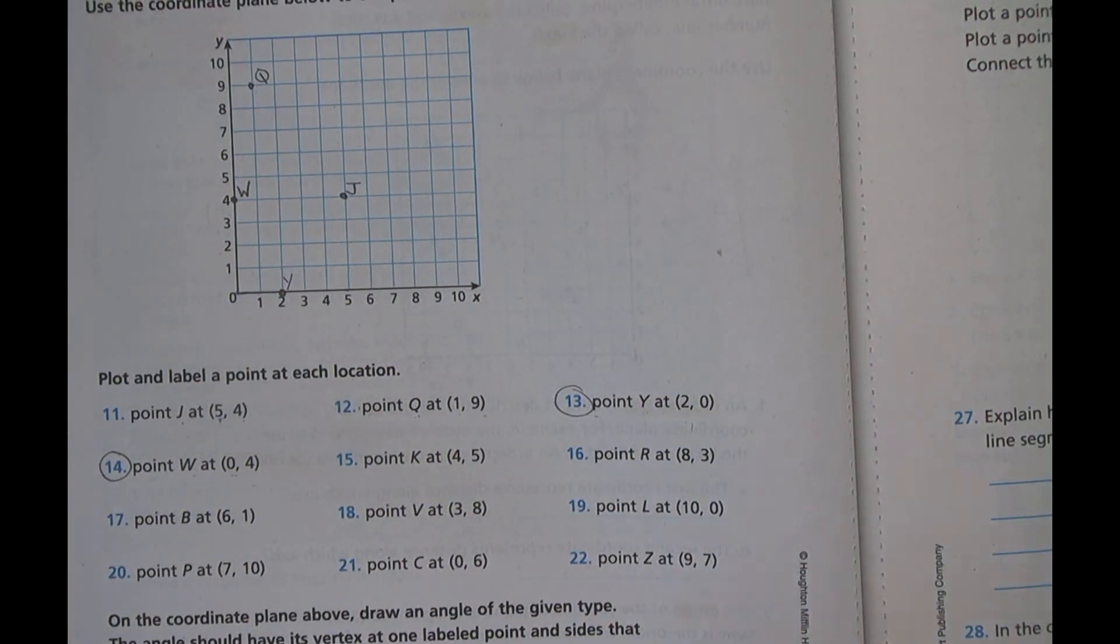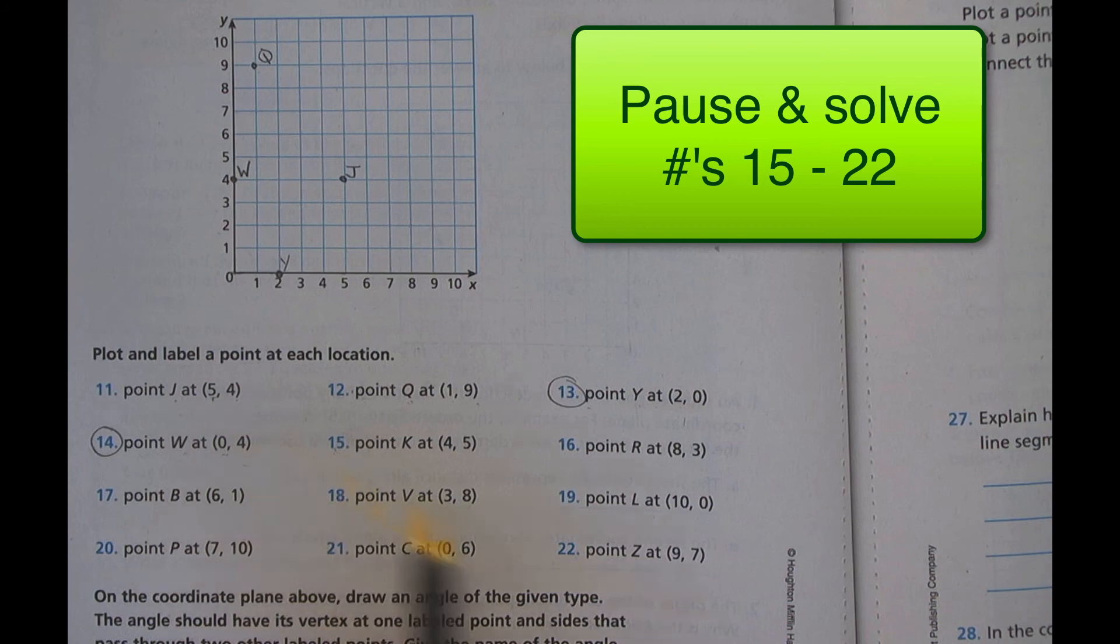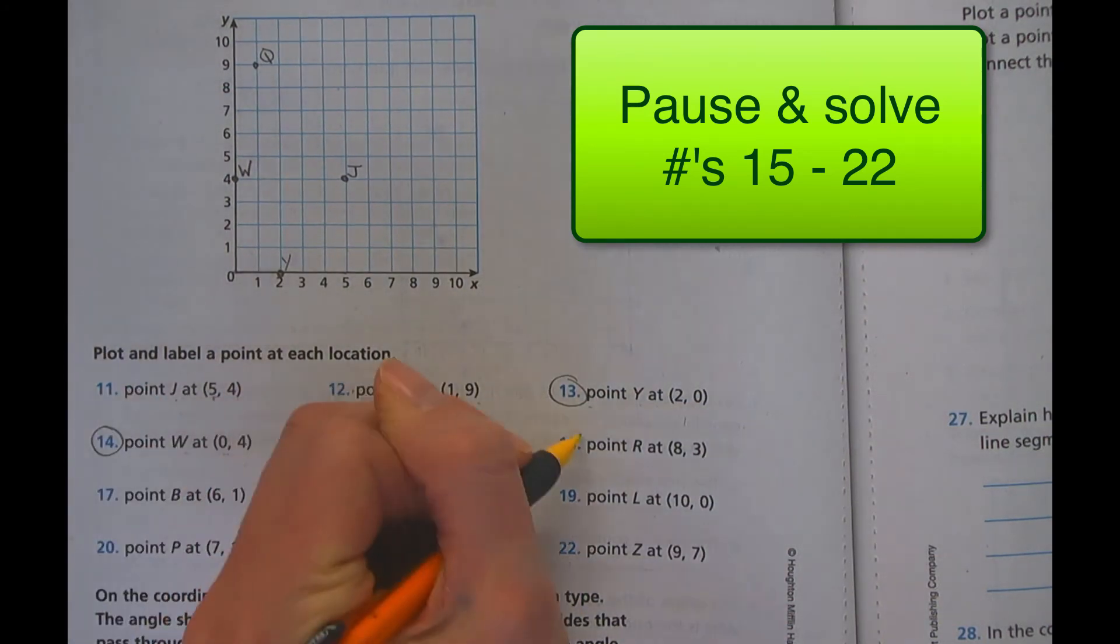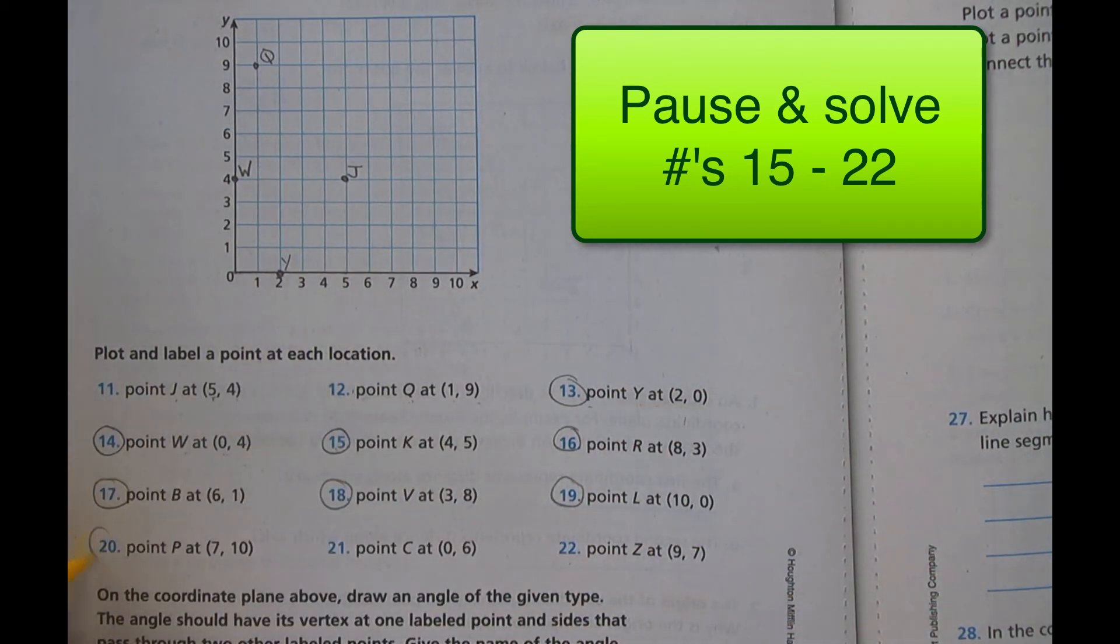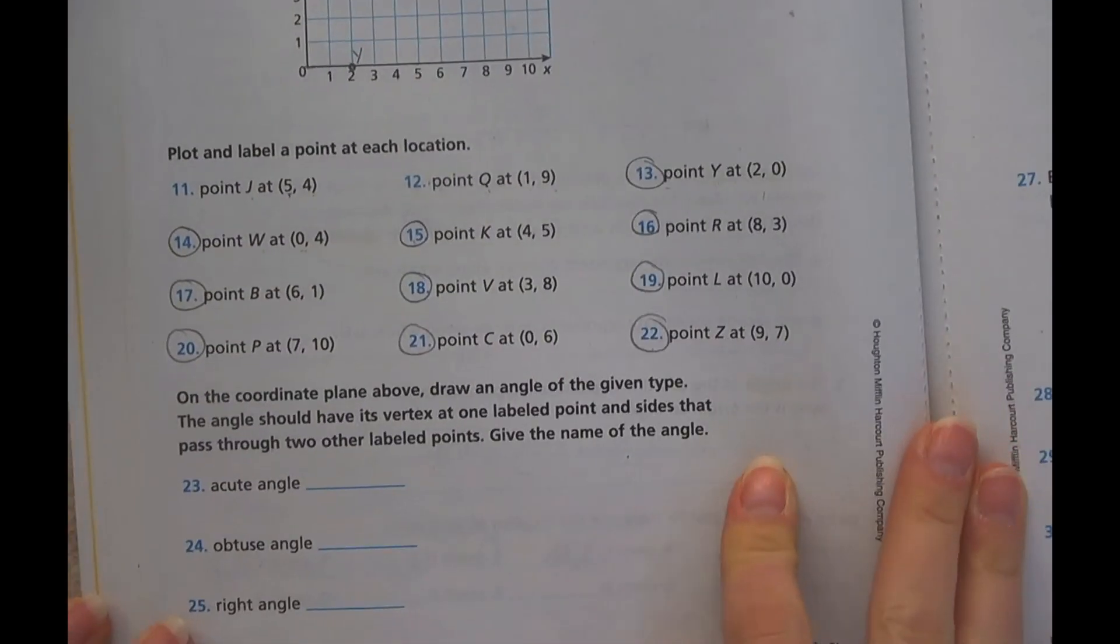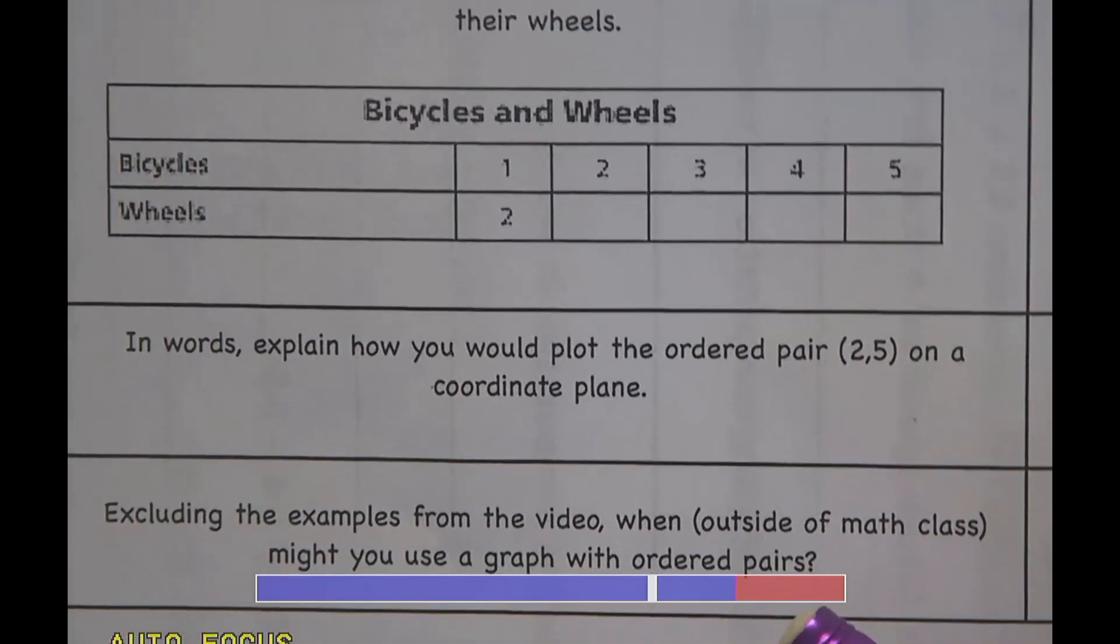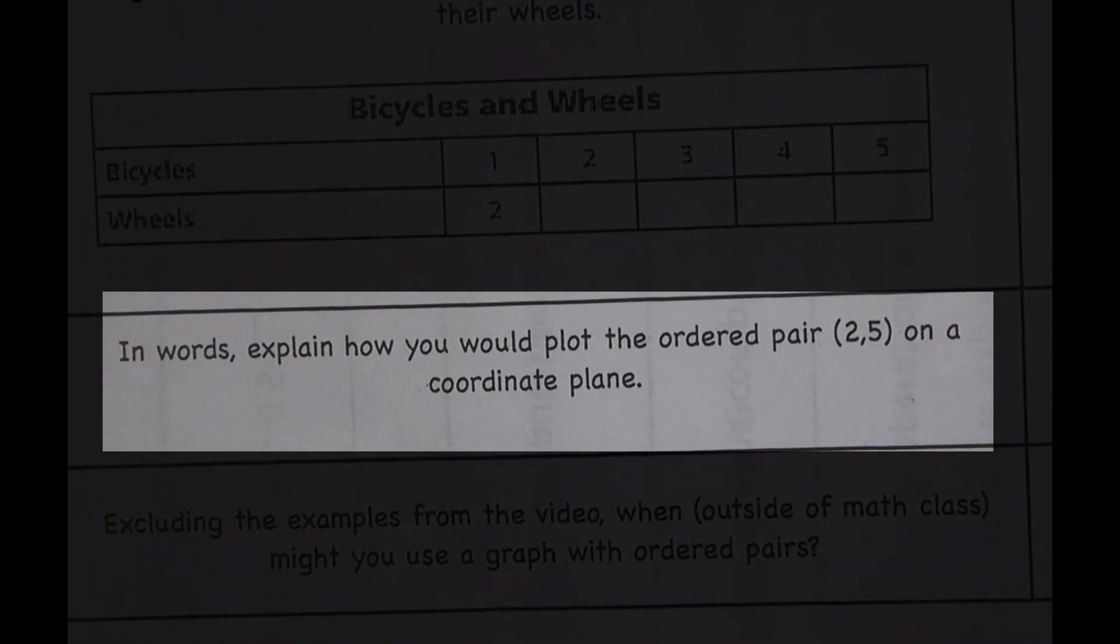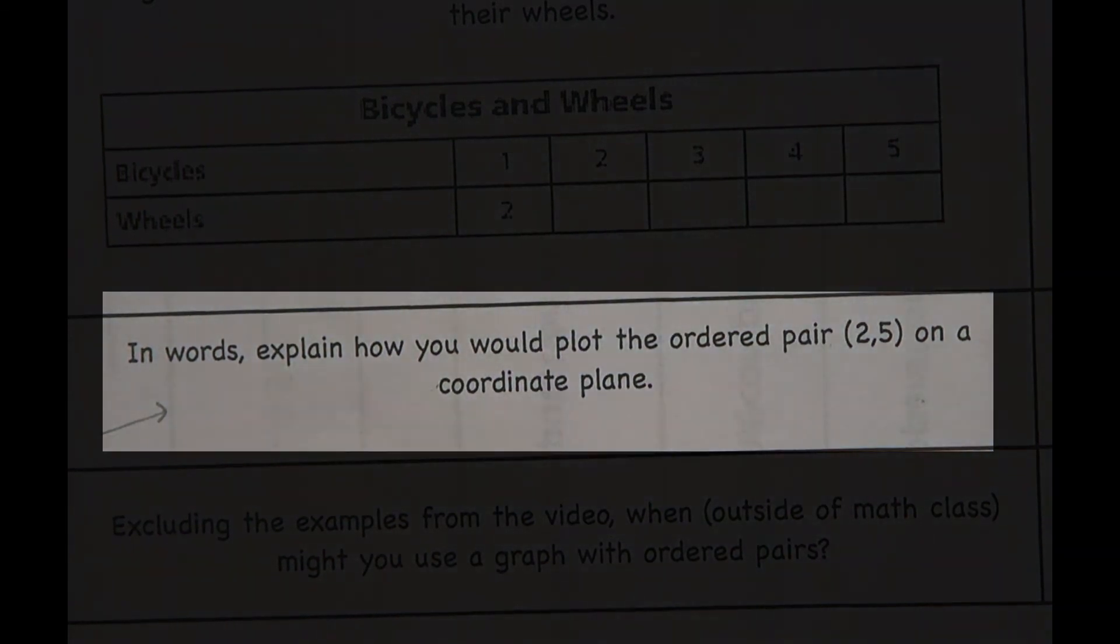What we would like you to do next then is just practice plotting these points more. You are going to do the next 15 through 22. You're going to do all these plotting your points. And then when we get into groups, we'll be able to compare and make sure that those points are in the right spot. And you do not need to do these ones. You get to skip those, but instead you get to do your guiding questions. So make sure that, and it'll be right here in words, explain how you would plot the ordered pair (2, 5) on the coordinate plane. So you're solving this one in words. So good luck. And we will go over those tomorrow.